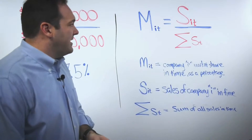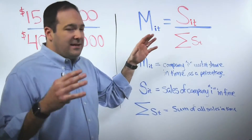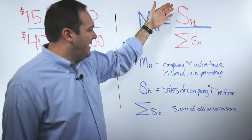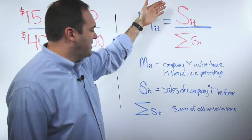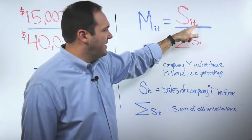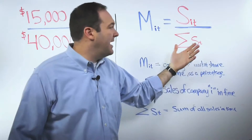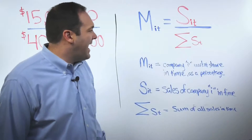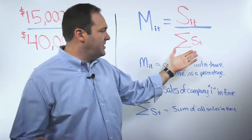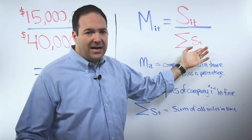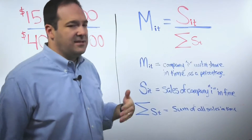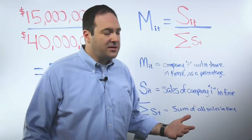We have a formula here. It might look scary, but it's pretty easy. You just need to know your sales for your company within a given period of time — your company is denoted by I here — and then your sales for your industry or category within the same time period. Those have to be consistent in order to get your market share.